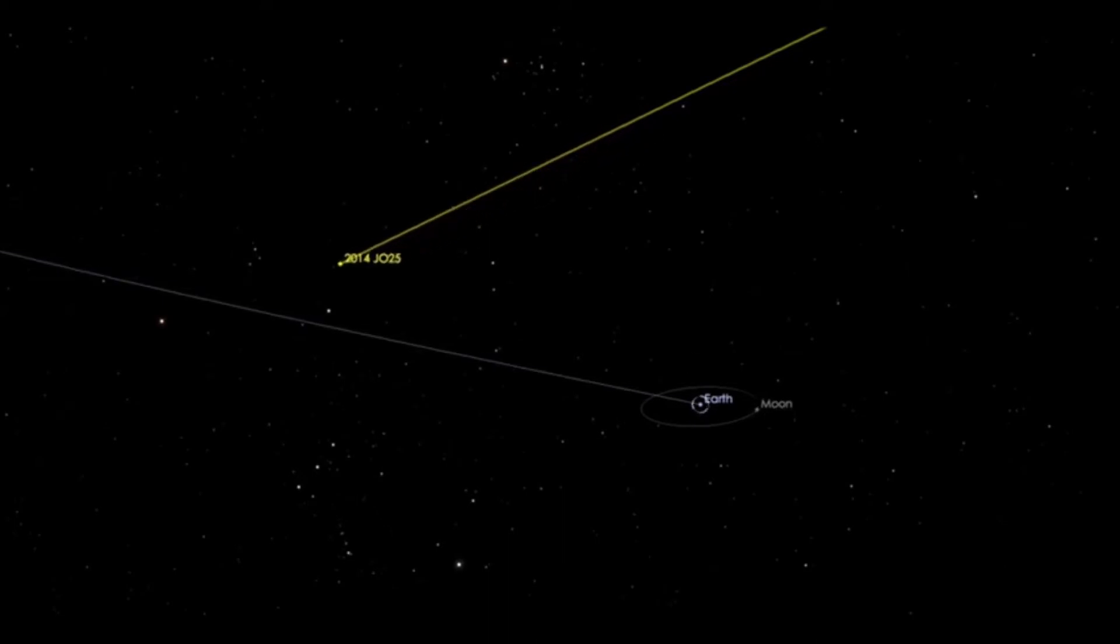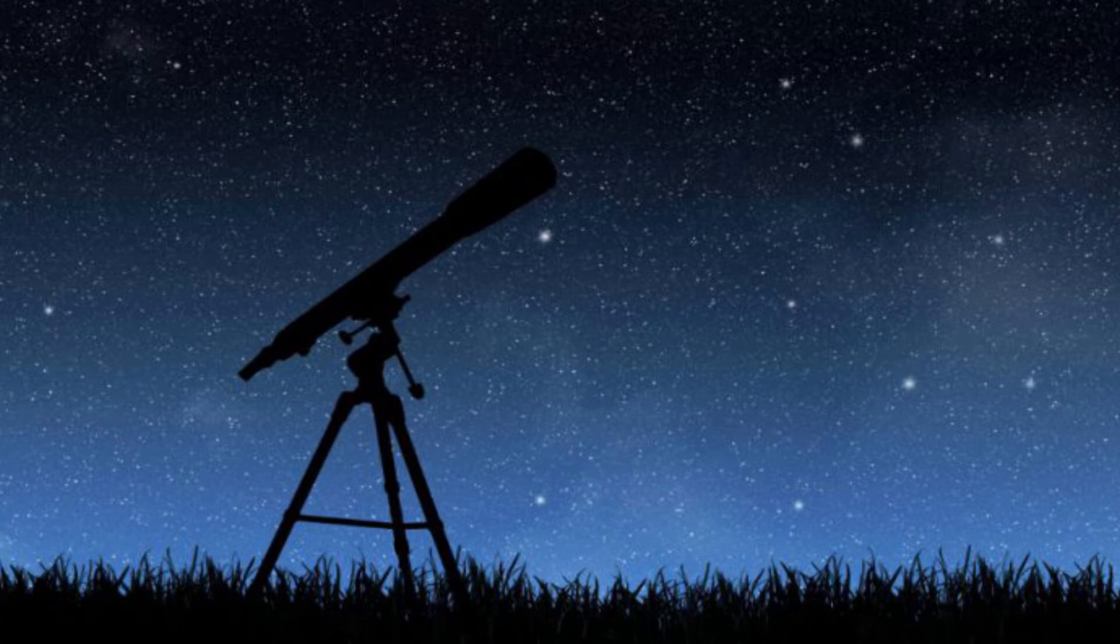The asteroid is named 2014 JO25 and its upcoming approach is the closest by any asteroid of this size since the 3.1 mile across asteroid approached within 4 lunar distances in 2004.